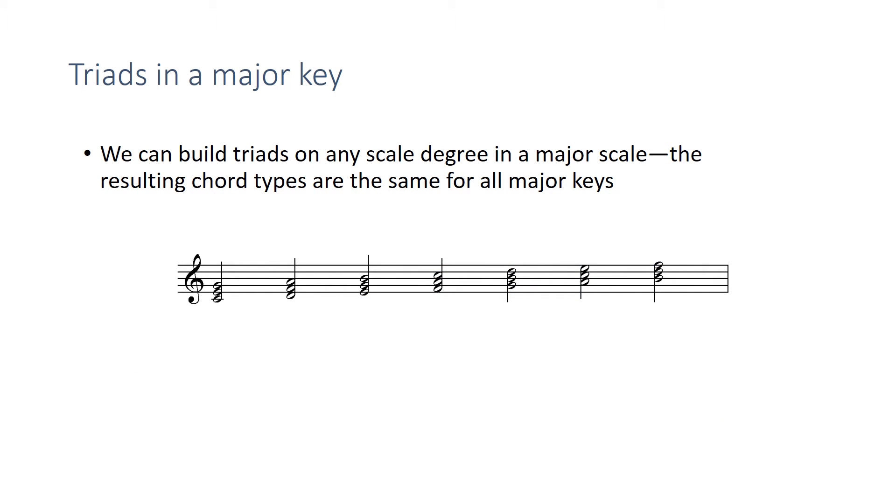We've been talking about all kinds of triads. Today we're going to look at the types of triads that occur naturally in keys, first of all in the major key. So if we were to build triads on the scale degrees in a major scale, then the resulting chord types would be the same for all major keys. And we can use Roman numerals to represent these chords.